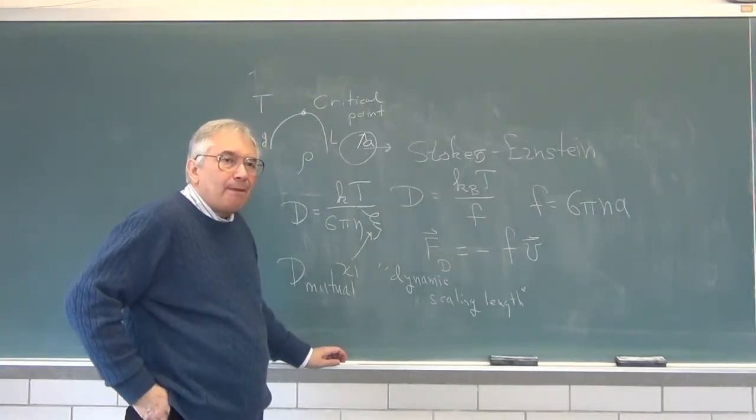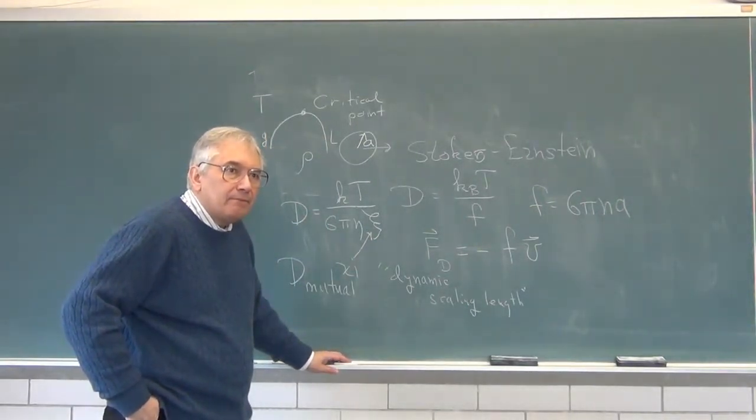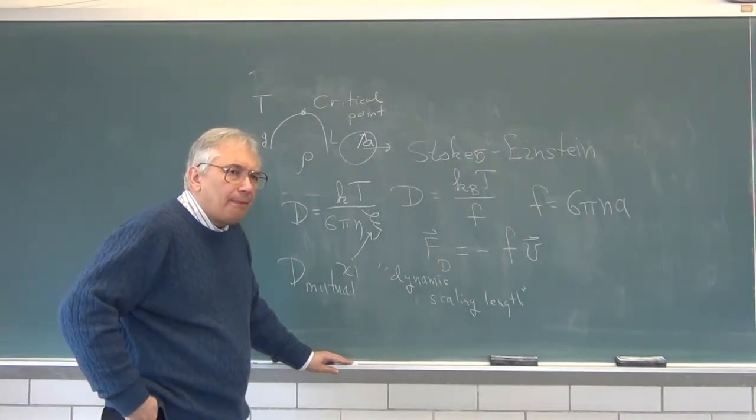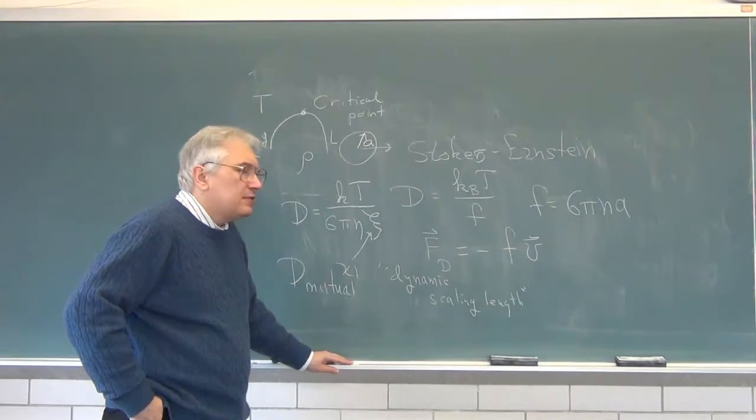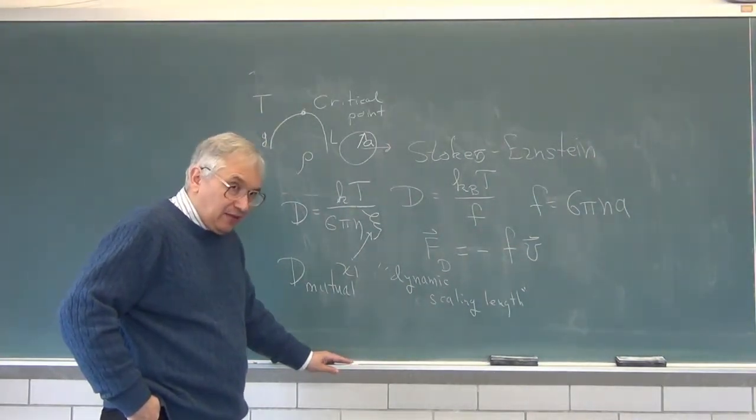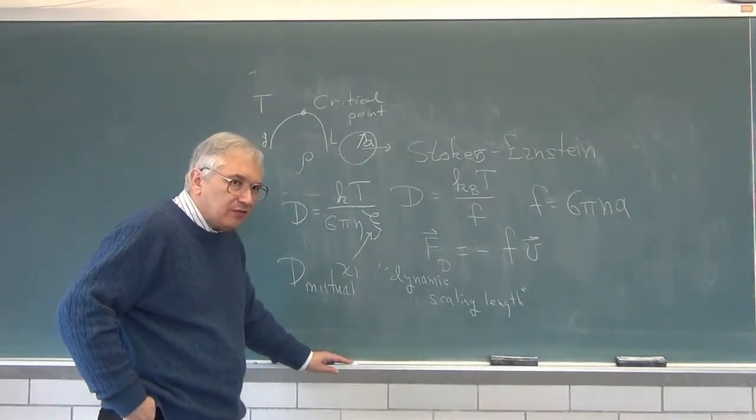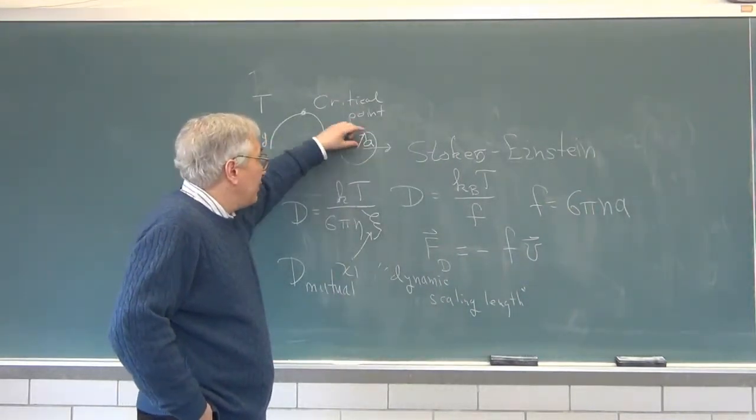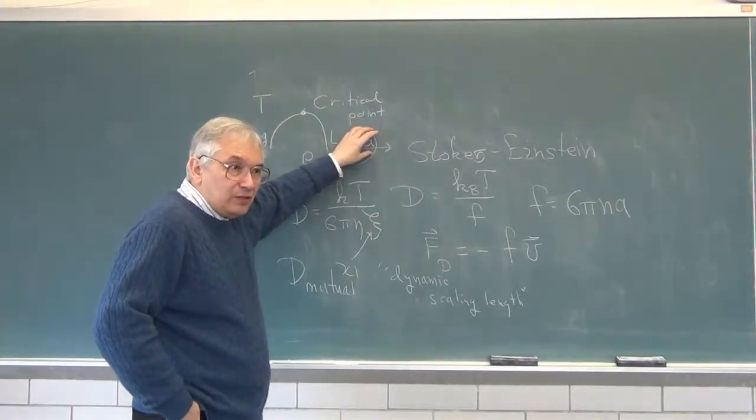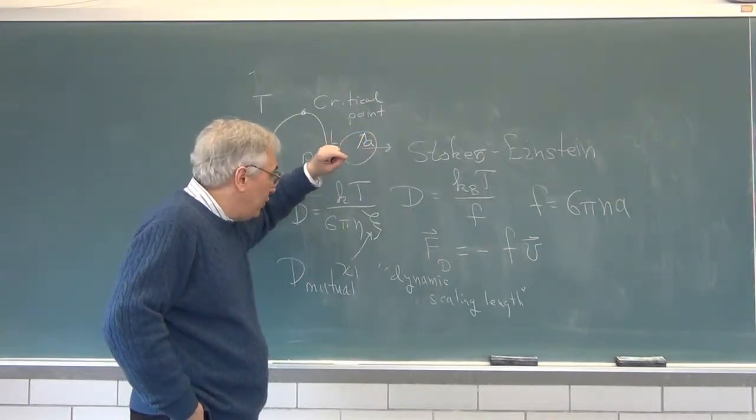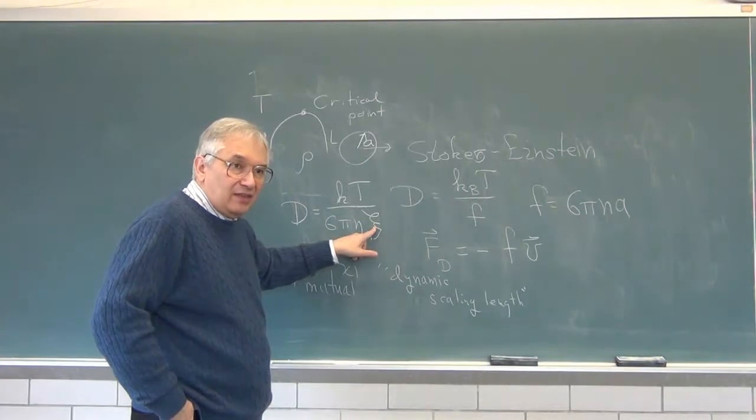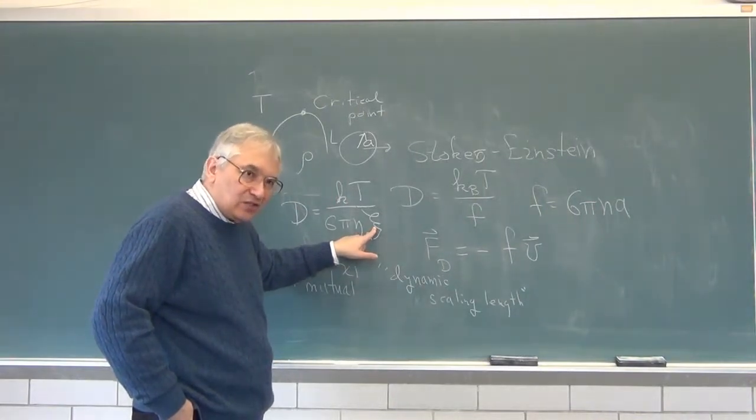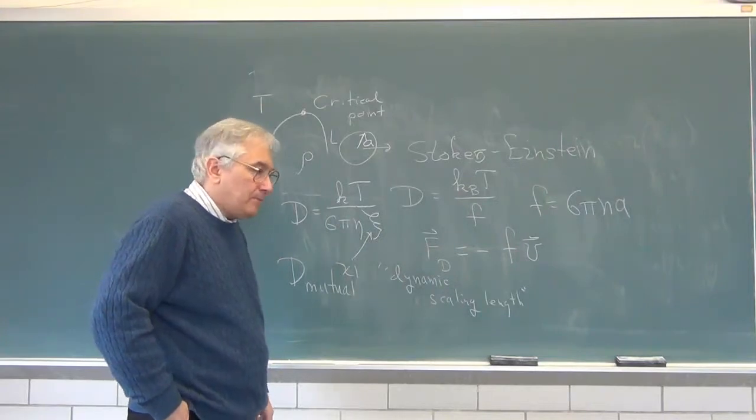People have taken this result and tried to use it to describe mutual diffusion that relaxes concentration fluctuations in polymer solutions. As we will see when we get to the right chapter, this approach is completely wrong, but you should be aware that there are people who do this. Psi plays the same role as the hydrodynamic radius.